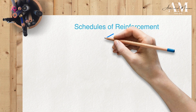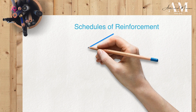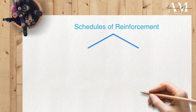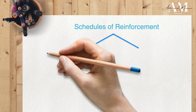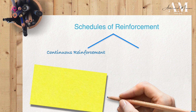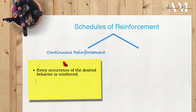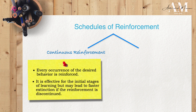There are two distinct approaches that govern how rewards shape behavior. Continuous reinforcement, as its name suggests, is straightforward: give a reward every time a specific desired behavior is exhibited. This category of reinforcement is effective for the initial stages of learning, but may lead to faster extinction if the reinforcement is discontinued.